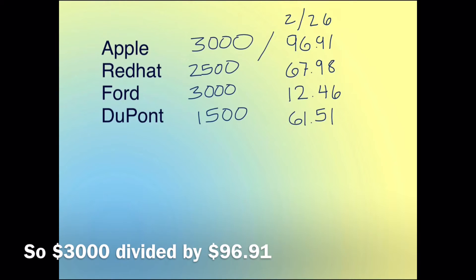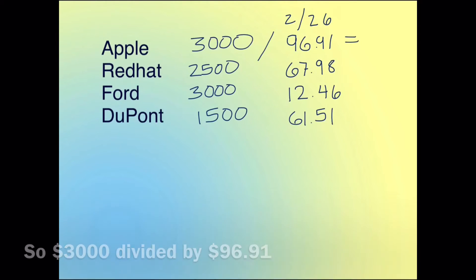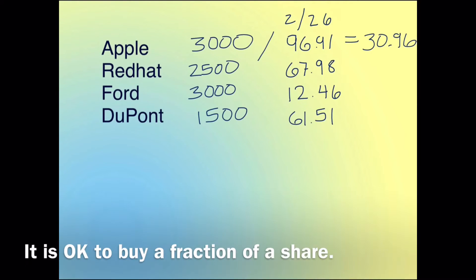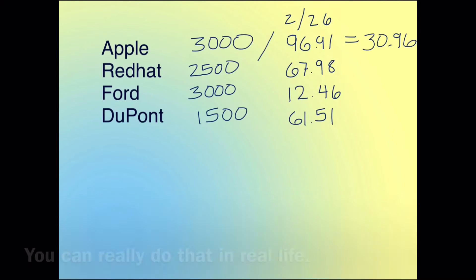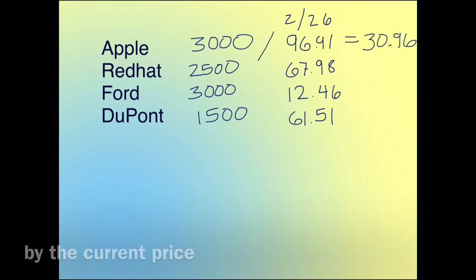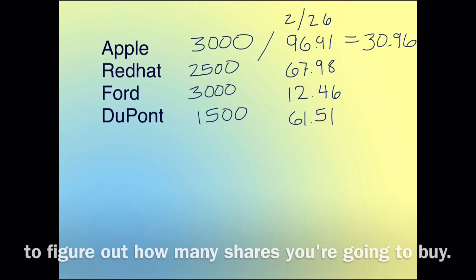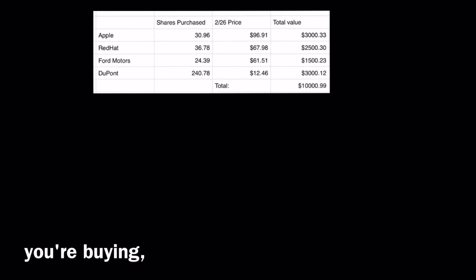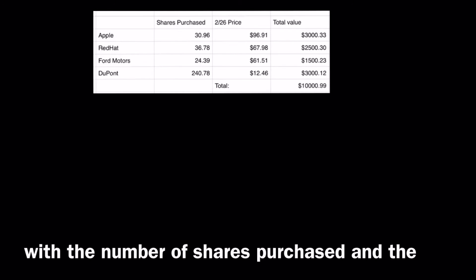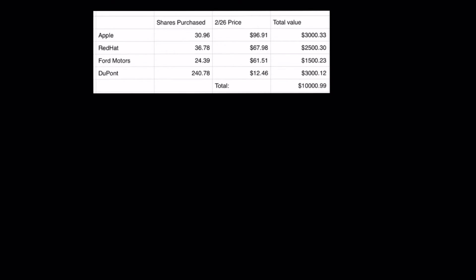$3,000 divided by $96.91 told me I was buying 30.96 shares of Apple. It is okay to buy a fraction of a share — you can really do that in real life. Go through and for each company divide what you're spending by the current price to figure out how many shares you're going to buy. Then put that information — number of shares purchased and your starting price — into Excel.